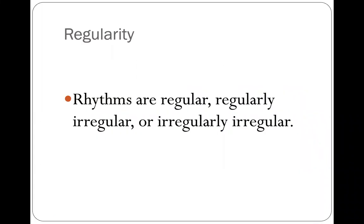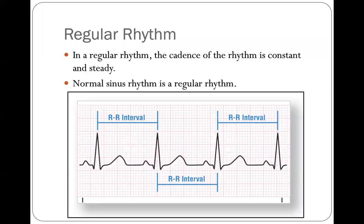All of your strip analysis when it comes to rhythm: we're asking if the rhythm is regular, regularly irregular, or irregularly irregular. In a regular rhythm, the rhythm is constant and steady. If we call something a normal sinus rhythm, it is in fact a regular rhythm — otherwise it would not be a normal sinus rhythm. In this case you see that all the R-to-R intervals match all the way through, and they should also match the P-to-P intervals.